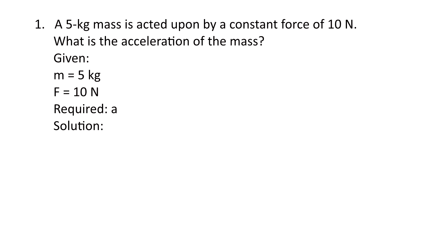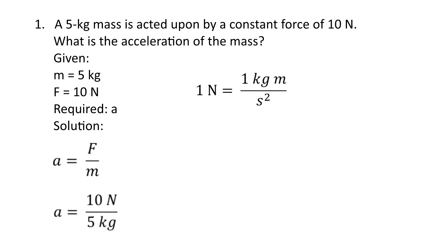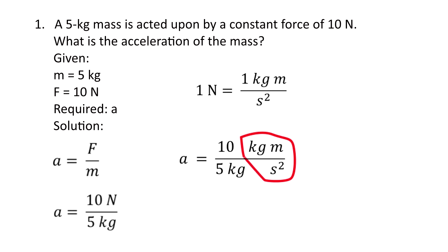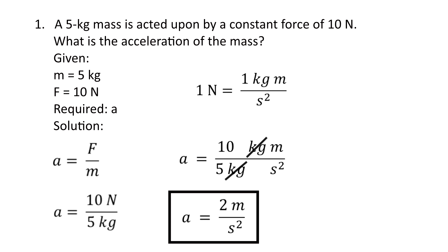To solve for the acceleration, we use the equation: acceleration equals force over mass. We substitute the values: acceleration equals 10 Newtons divided by 5 kilograms. Since 1 Newton equals 1 kilogram·meter per second squared, we have acceleration equals 10 kg·m/s² divided by 5 kg. The kilogram units cancel, and we get acceleration equals 2 meters per second squared.